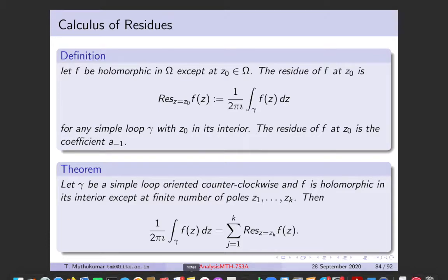So the residue theorem tells you that when f is holomorphic everywhere (giving zero), and when f is not holomorphic at some points and blows up there, the value of the integral is precisely the sum of the residues. If you know the Laurent series about every pole zₖ, the residue is precisely the coefficient a₋₁ corresponding to that Laurent series.